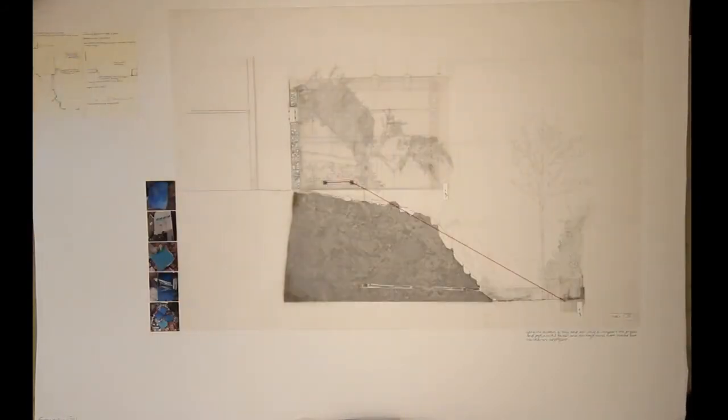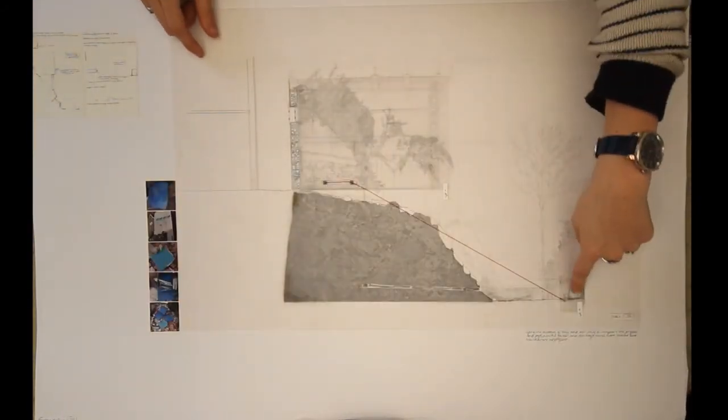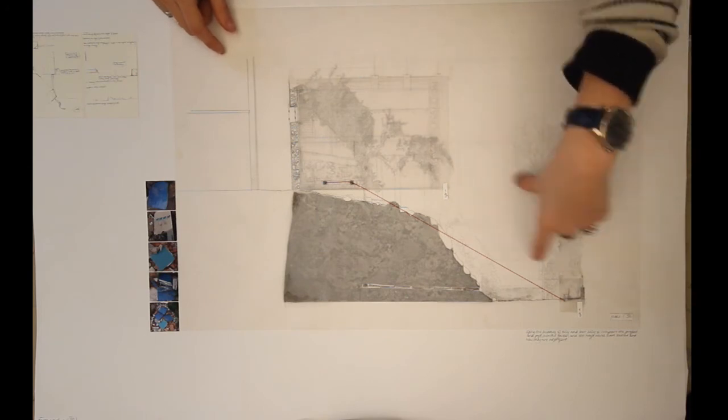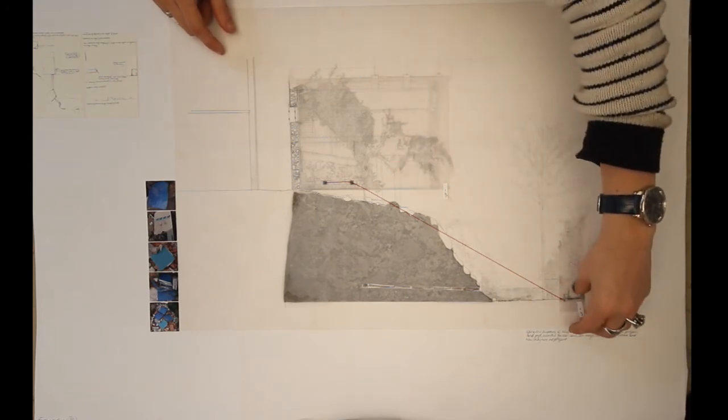And this is the section which shows the tiles. So the top layer is what used to be there and then the bottom layer is what's there at the moment.